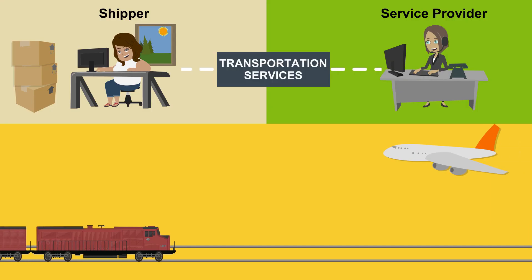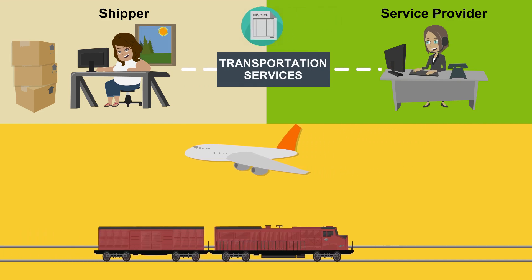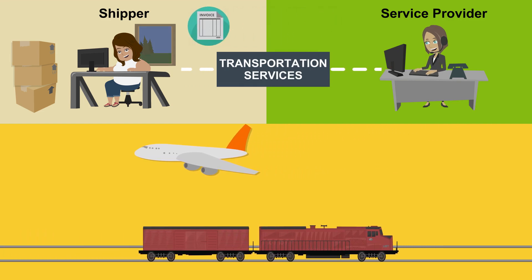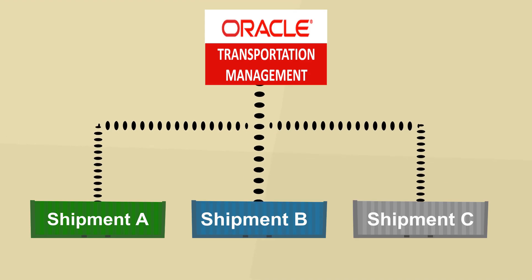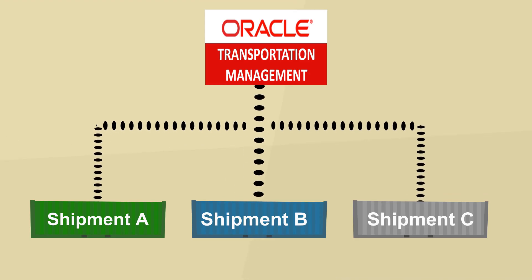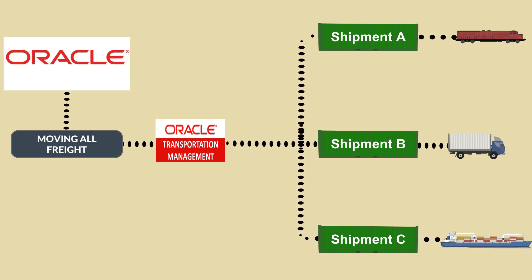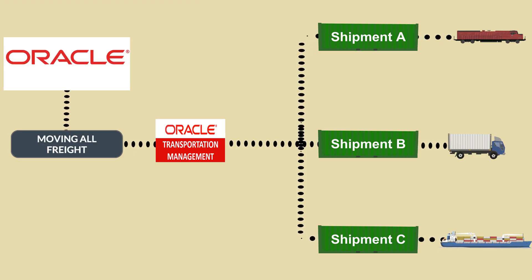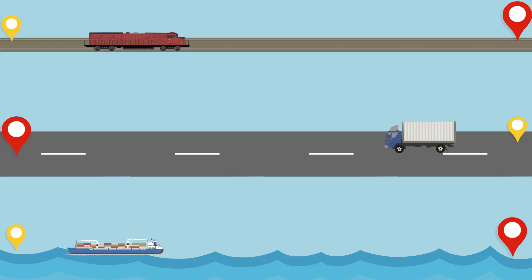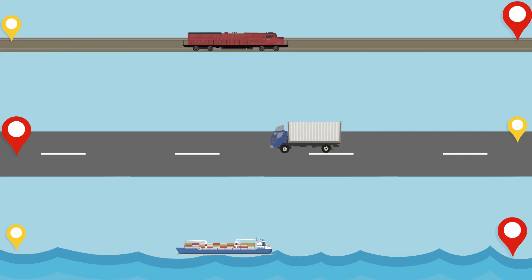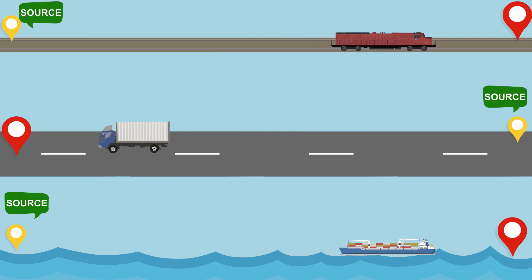The shipper buys the transportation services from the service provider, who then sends the shipper an invoice for the amount owed. In this figure, OTN has created three buy shipments for the shipper, moving all freight for an Oracle client. OTN tenders the shipments to three service providers, and each carrier transports the goods and then invoices for moving the cargo from source to destination.